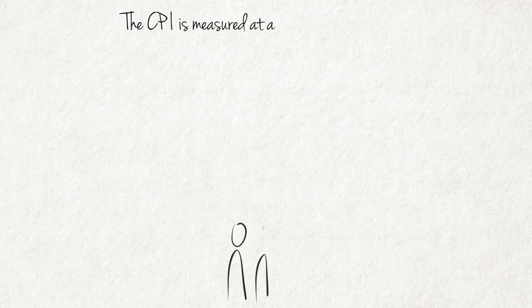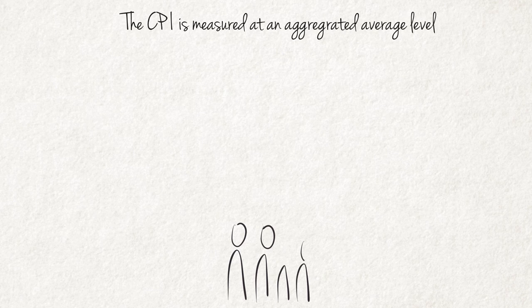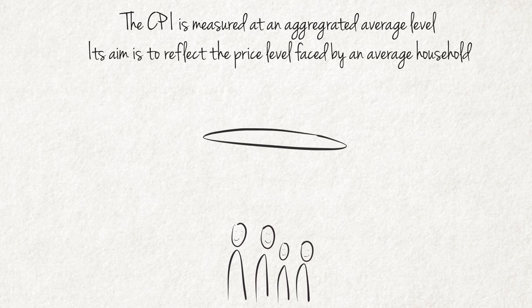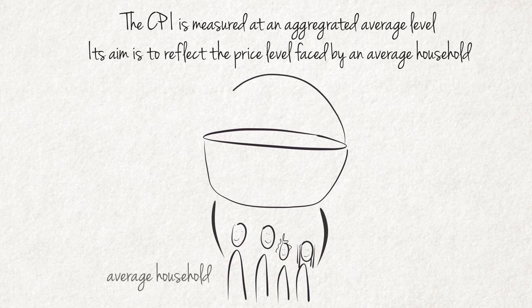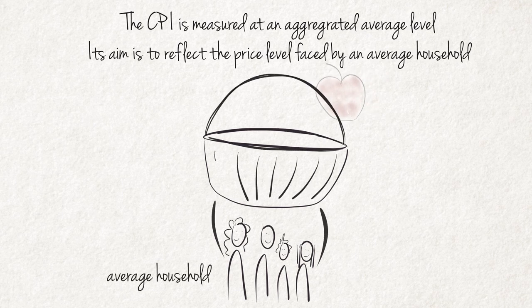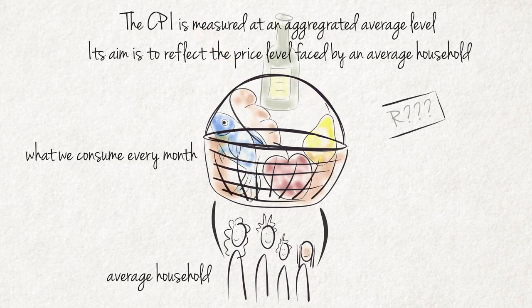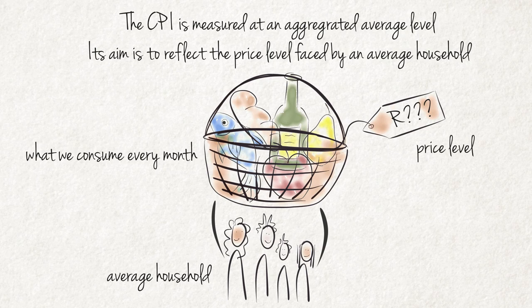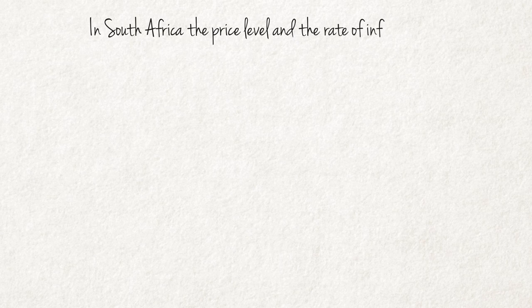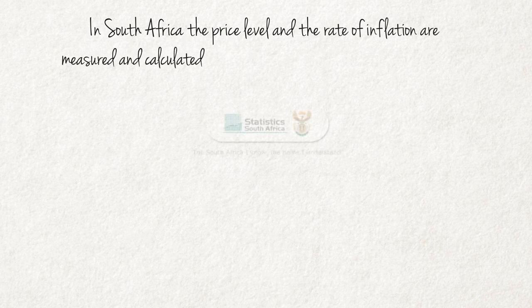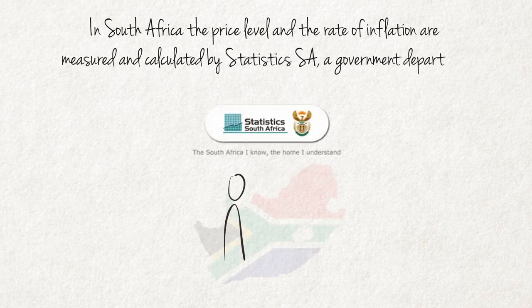The CPI is measured at an aggregated average level. Its aim is to reflect the price level faced by the average household. Visualise, for example, a huge basket containing all of the hundreds of goods and services consumed every month by a typical household. But what do we mean by price level and average household? In South Africa, the price level and the rate of inflation are measured and calculated by Statistics South Africa, a government department.